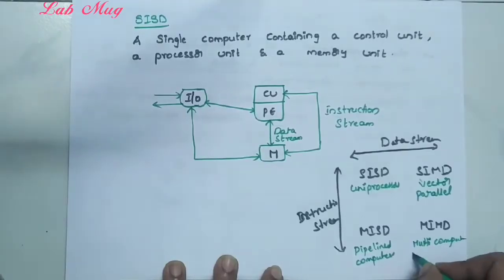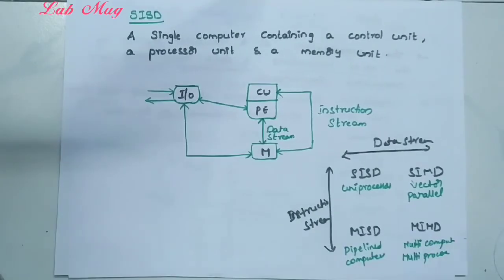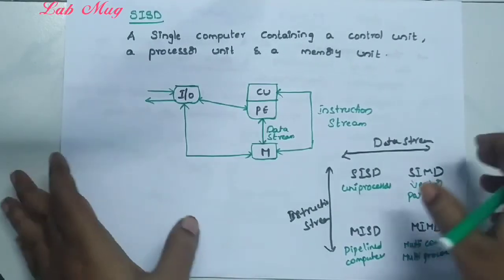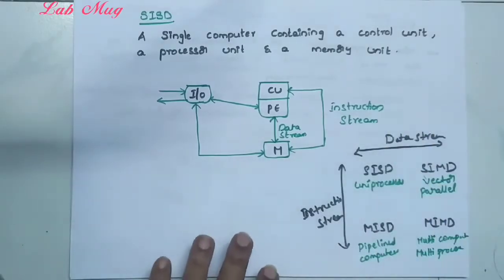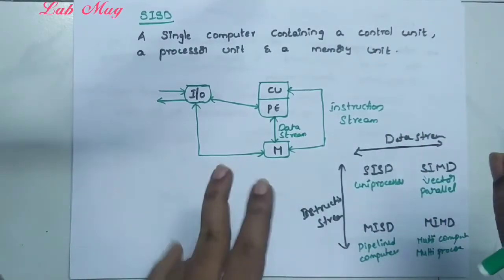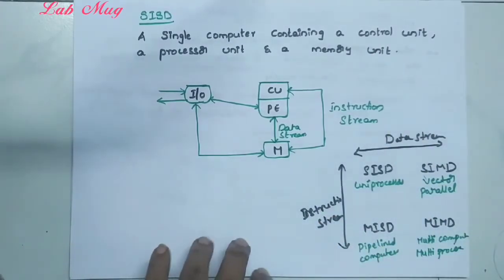For MIMD, there are multi-computers and multi-processors. These are the examples for each category. So next, let's look at SISD — the first category, Single Instruction Single Data.